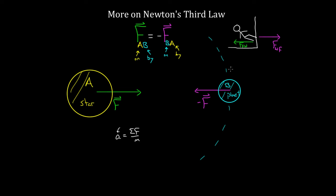Newton's third law is universal, but people still have trouble identifying these third law partner forces. One of the best ways to do it is by listing both objects. As soon as you list both objects, to figure out where the partner force is, you can just reverse the labels. If one of my forces is the force on the wall by my foot, to find the partner force I reverse the labels and get the force on my foot by the wall.